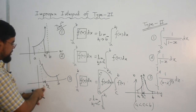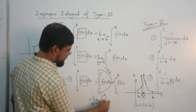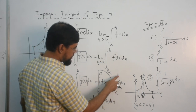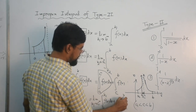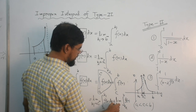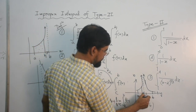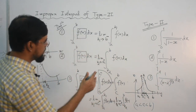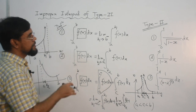For the second integral from c to b, the integral is improper because of the lower limit. So replace the lower limit by k2, where k2 is approximate to c from the right side (k2 → c⁺), so you add a plus sign. These are the three definitions. By using these definitions, we can evaluate any improper integral of type 2.